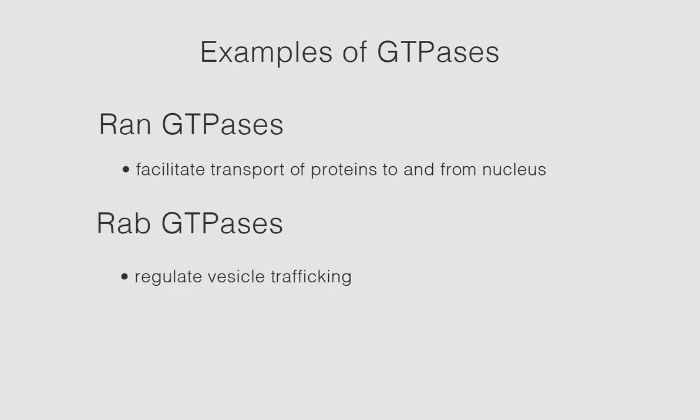RAB GTPases, which regulate vesicle trafficking, and RAS GTPases, which play an essential role in cell signaling for differentiation and growth.